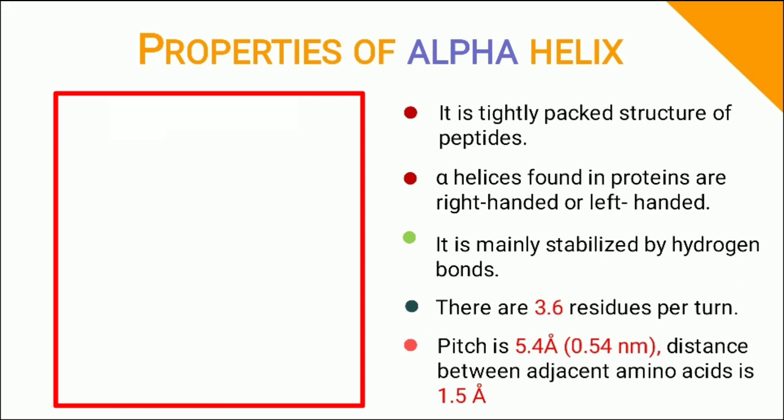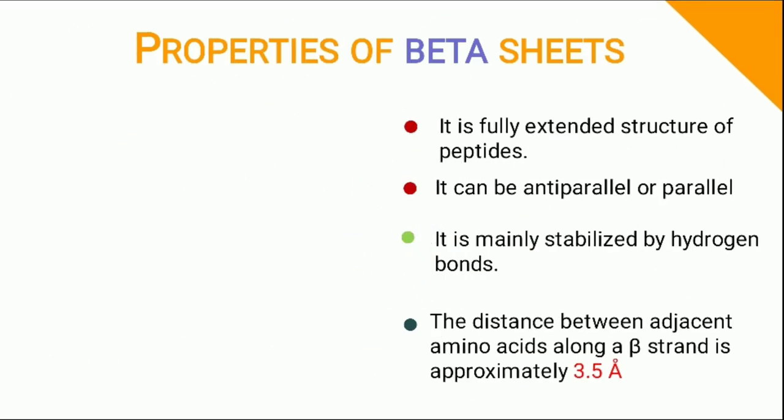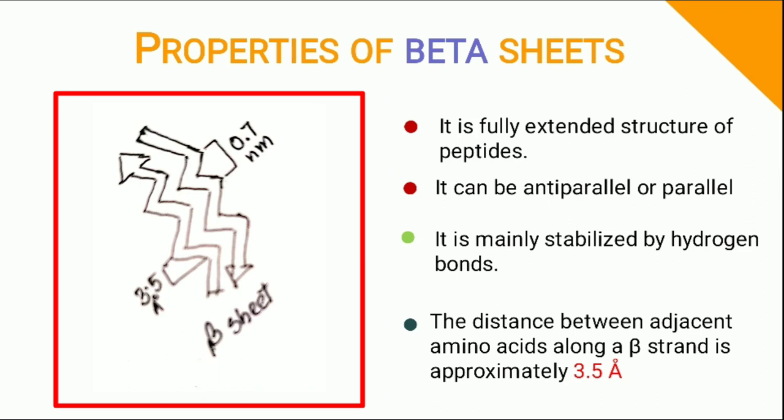On the other hand, beta sheets are fully extended. When two peptide chains run in the same direction, it's called parallel beta sheet and if run in opposite direction, it's called anti-parallel beta sheet. There are two amino acid residues per turn and the distance is 0.35 nm.